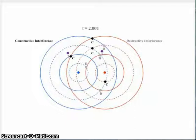all of the constructive interference locations will be locations where the distances differ by zero wavelengths, or one wavelength, or two wavelengths, or three wavelengths.